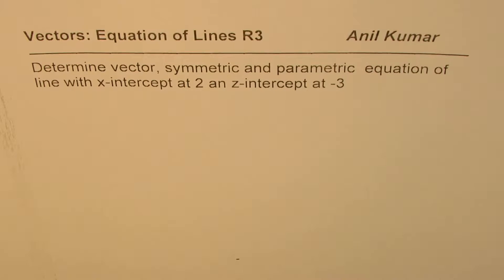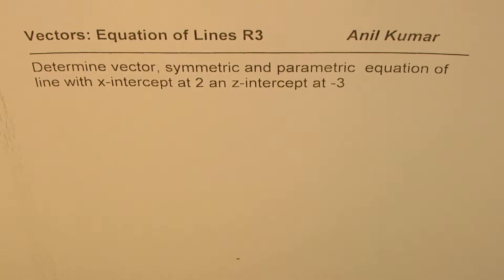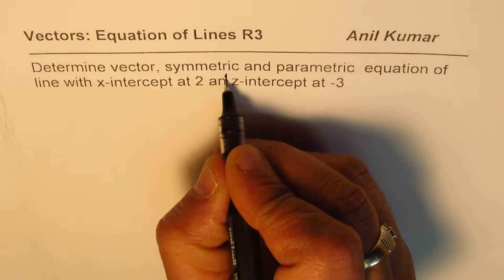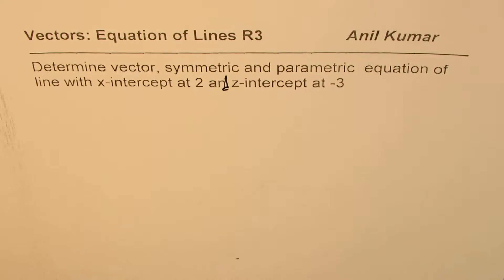We are working on vectors and we are exploring equations of lines in R3. The question here is, determine vector, symmetric and parametric equation of the line with x-intercept at 2 and z-intercept at minus 3.